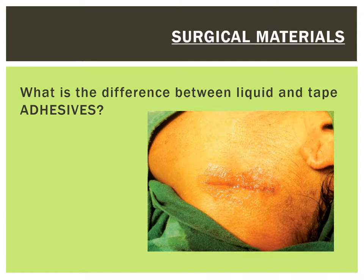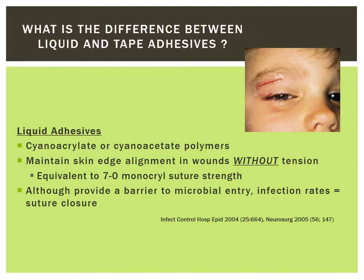What's the difference between liquid and tape adhesives? Liquid adhesives have been around since the 1950s, but originally they caused an excessive amount of skin reaction and dermatitis. Current liquid adhesives polymerize and harden in a non-oxygen dependent manner, so fanning them does nothing except cool them down and possibly slow down the process. They are equivalent to a 7-0 monocryl suture closure, and should only be used in wound edges that stay together without tension. Although they theoretically provide a barrier for microbial entry, their infection rates are equivalent to suture closure. If you need to remove them, use petroleum jelly; otherwise you can peel off the skin if trying to remove them within the first two days. This is a common problem among elderly friable skin.